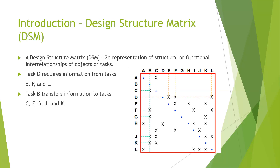A design structure matrix is a 2D representation of structural or functional interrelationships of objects or tasks. The tasks are placed around the matrix as rows and columns and are lettered — tasks A, B, C, D, E, and so on. X's represent task dependencies. So task D requires information from tasks E, F, and L, meaning if you go to row D, task D depends on E, F, and L — those are the X's marked there.